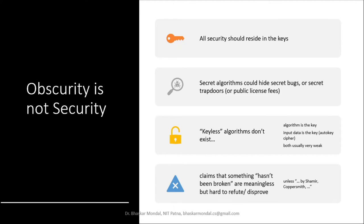Secret algorithms could hide secret bugs or secret trapdoors. You might ask why algorithms are not kept secret — why not develop an algorithm and keep it secret among ourselves? The question is: who knows whether the algorithm you are secretly developing is truly secure, or whether there are bugs or trapdoors in it?